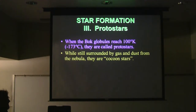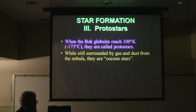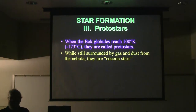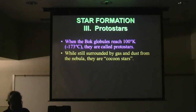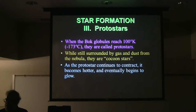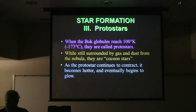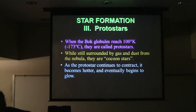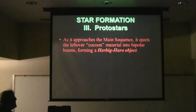You hear some fanciful names: if those protostars are surrounded by some more gas, dust, and nebulosity, they're called cocoon stars — wrapped up in a blanket of surrounding material. As it continues to contract, it gets hotter and eventually gets hot enough to where we can actually see it glowing. Like an electric stove that gradually gets red hot, then orange hot — and if you were a star, it might get even hotter than that.